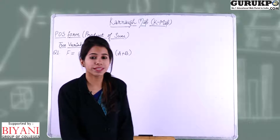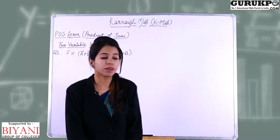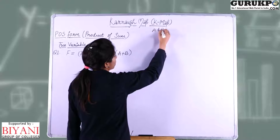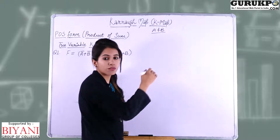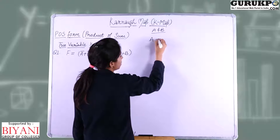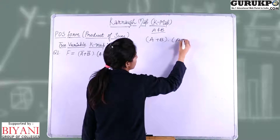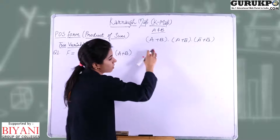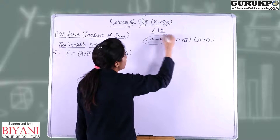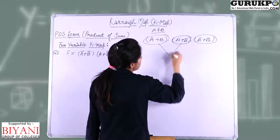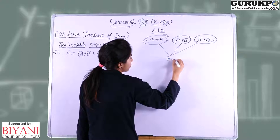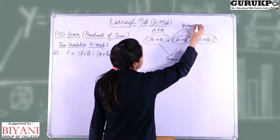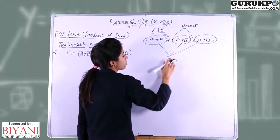Before moving to the examples, let us know what is POS form. POS means product of sum. Suppose we have two variables A and B, then these two variables can be written in the form of POS as: (A plus B) dot (A plus B-bar) dot (A-bar plus B-bar), and so on. We can see from this expression that A+B, A+B-bar, A-bar+B — all three represent sums, and the dot means product. So this expression is in the form product of sum.